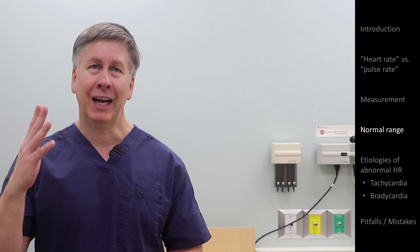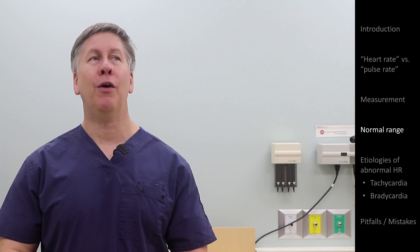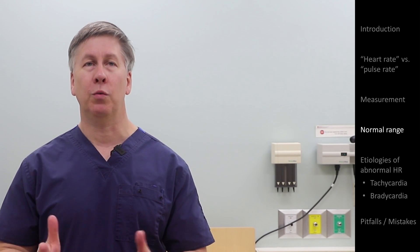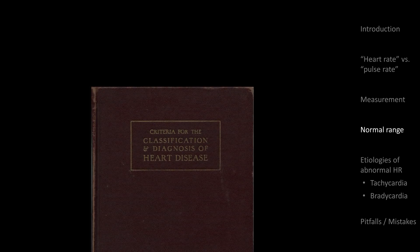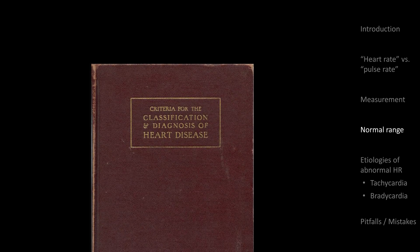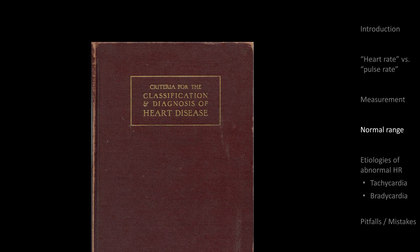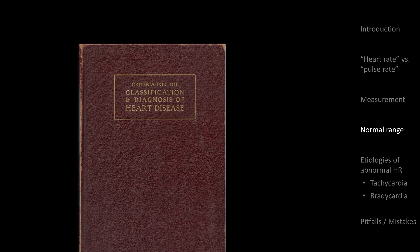Like all myths, this one has an origin somewhere — you just won't believe how arbitrary this particular one was. In 1928, a committee of cardiologists belonging to the New York Tuberculosis and Health Association created the first edition of a book originally known as Criteria for Classification and Diagnosis of Heart Disease, intended to create consensus definitions and criteria for cardiovascular pathology.